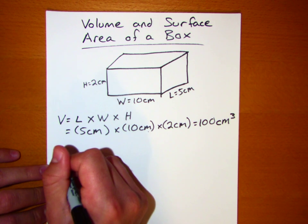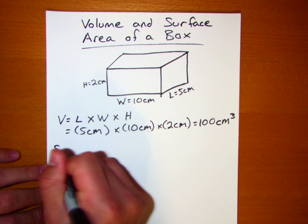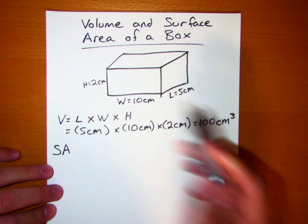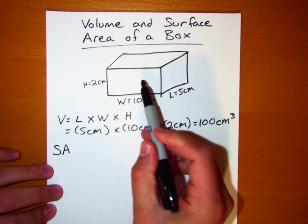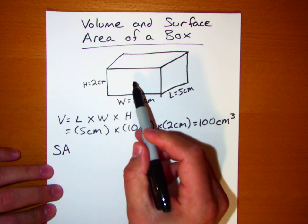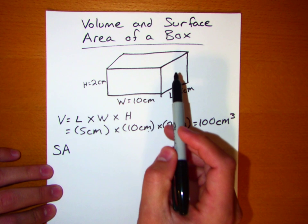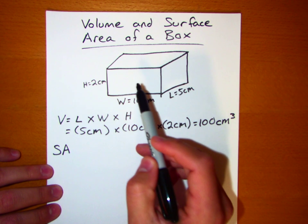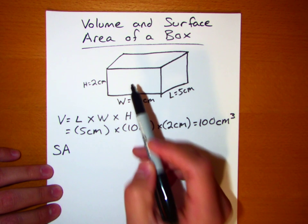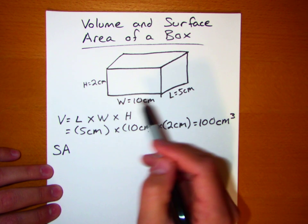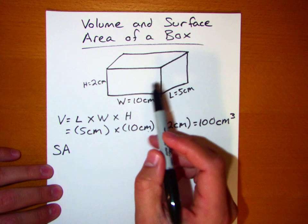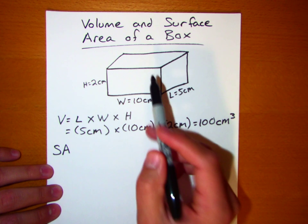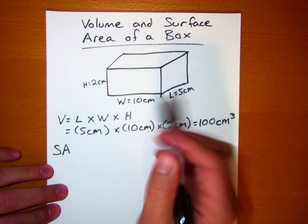Now the area — specifically the surface area — you have to remember that a box is made up of six faces, and each of those faces is going to have an area. So to find the surface area of the box, we're just going to add up the areas of each of those six faces.